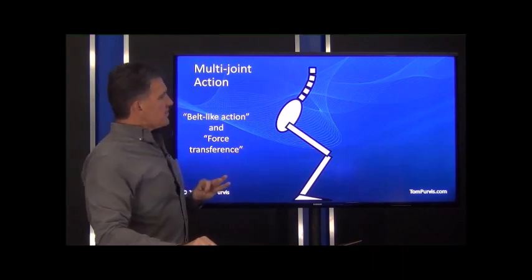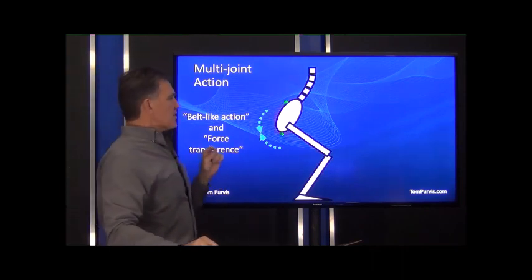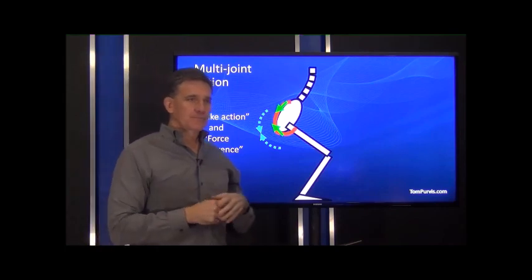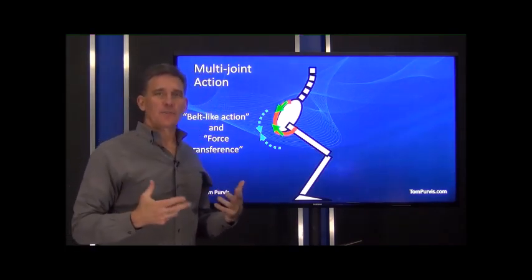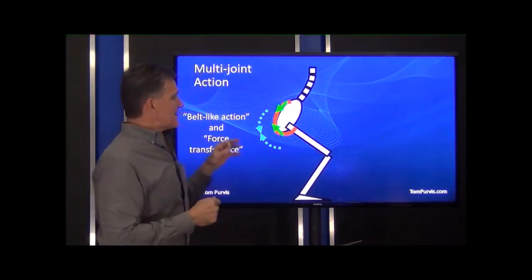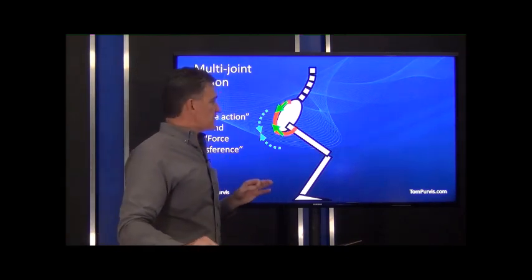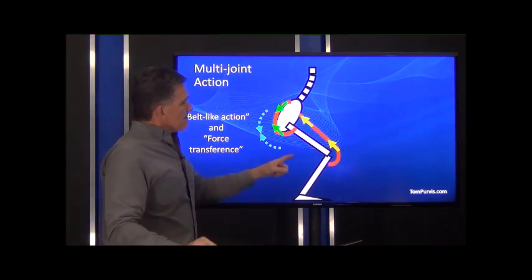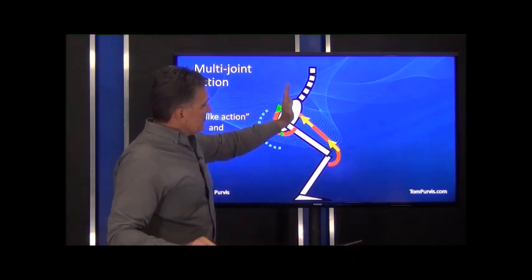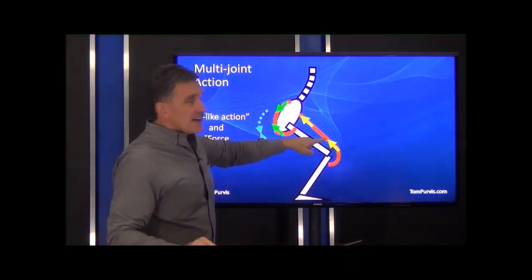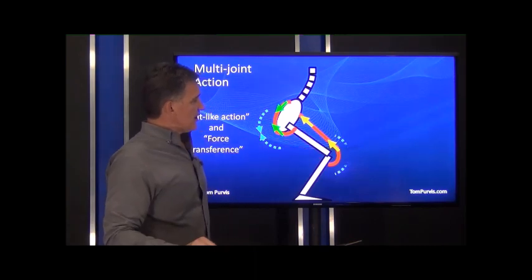But this force transference is interesting, because if I consider the glutes to be the primary, major, super awesome, and they are hip extensor, when required with the right directional resistance. And if they actually extend the hip, and this guy stays relatively isometric, this knee has to straighten also.